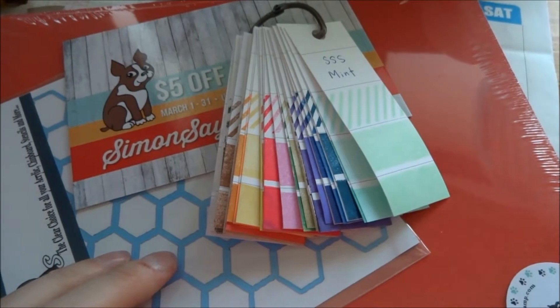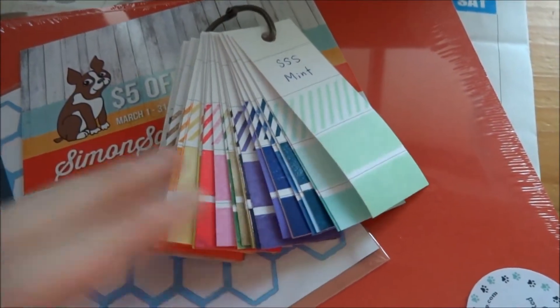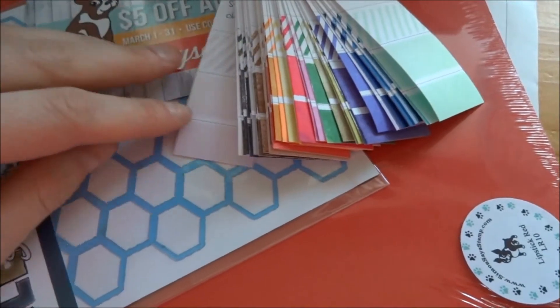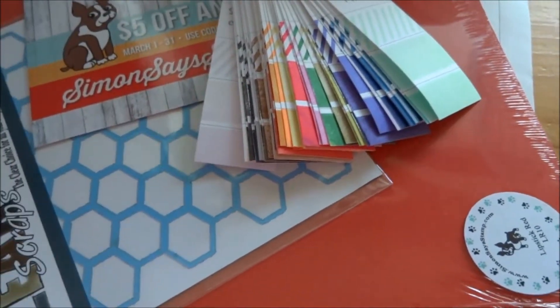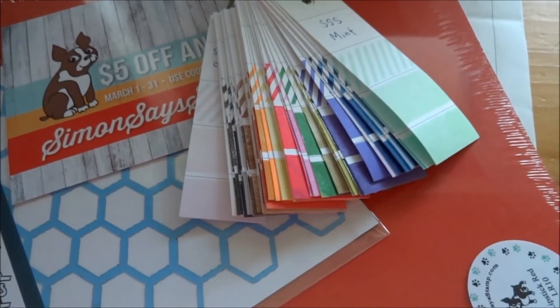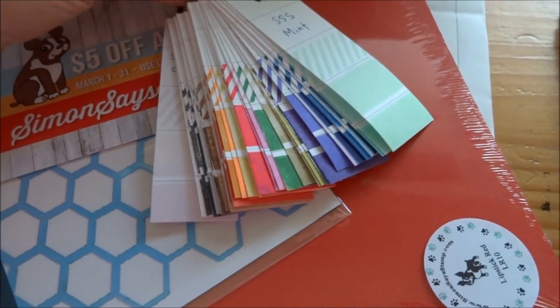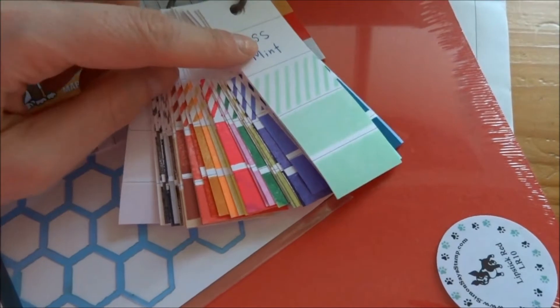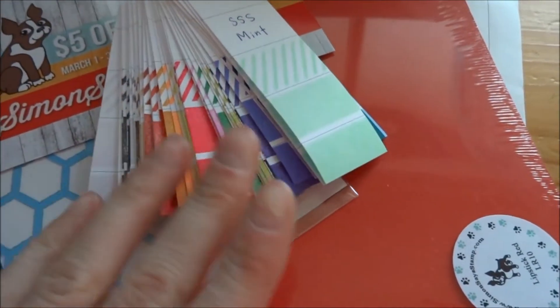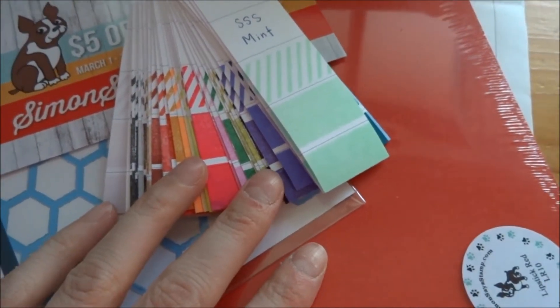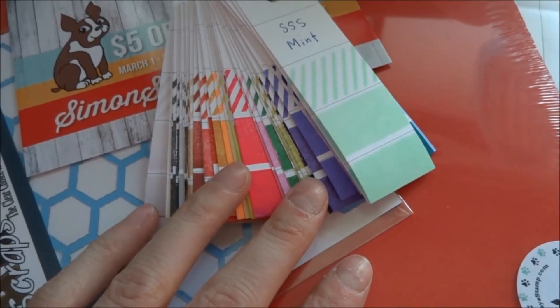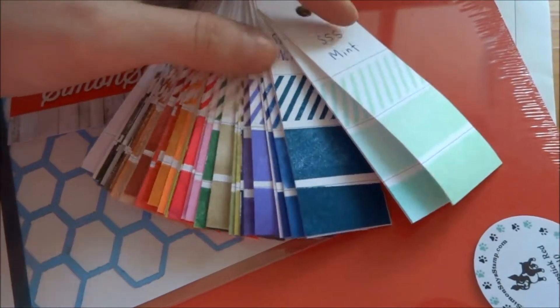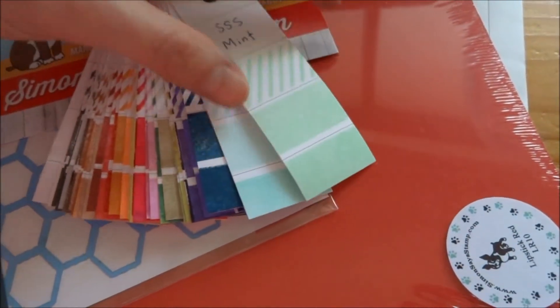Sorry guys, the camera died. I'm back. I've been stamping and I have a bunch of my inks here. These are basically all my Memento, Brilliance, Versifying, Versamagic, some Hero Arts, and my one Paper Trey Ink and one Simon Says Stamp and Stampin' Up. So the only thing I haven't stamped are my Distress Inks and my StazOn.